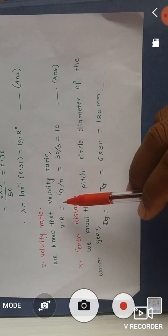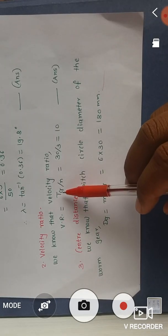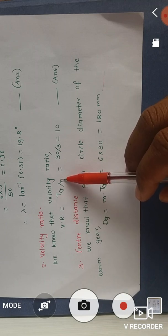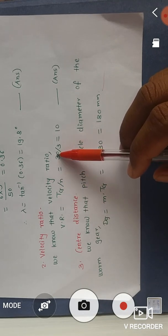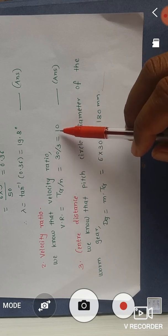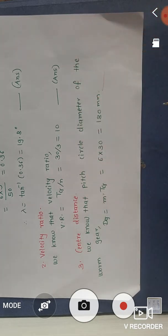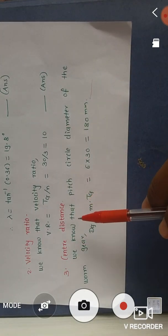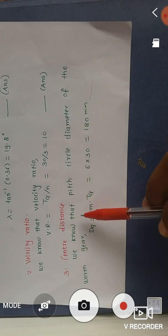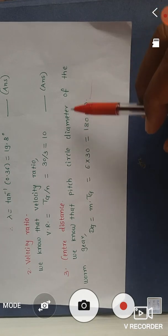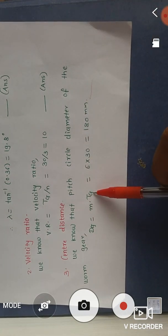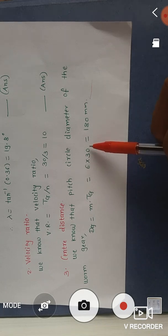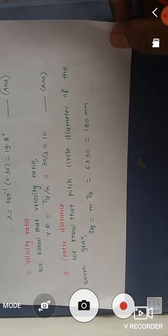Second, the velocity ratio equals the number of teeth on the gear divided by the number of starts on the worm: 30 / 3 = 10. Third, the pitch circle diameter of the worm gear is dg = module × number of teeth on gear = 6 × 30 = 180 mm.